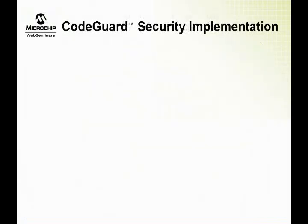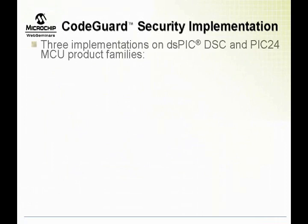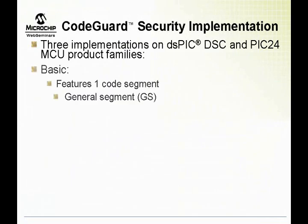Based on the maximum number of segments supported on a device, Microchip's 16-bit devices may have one of three implementations of CodeGuard security. The basic implementation supports one continuous segment of flash memory. This segment is called the general segment, and it may be optionally code protected.